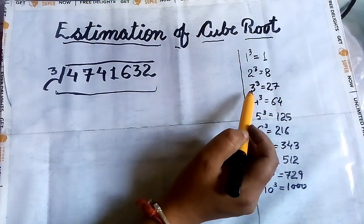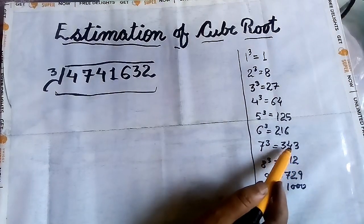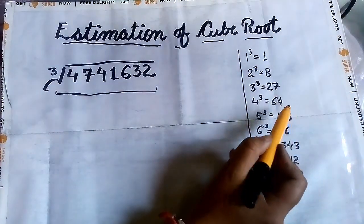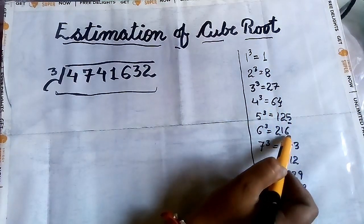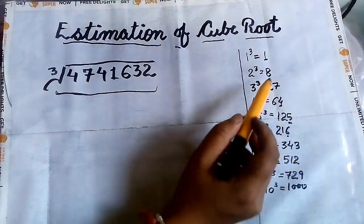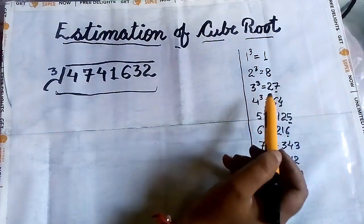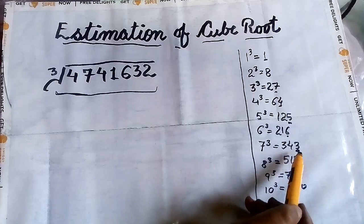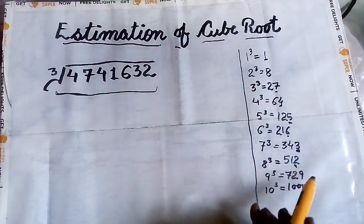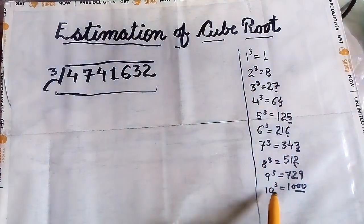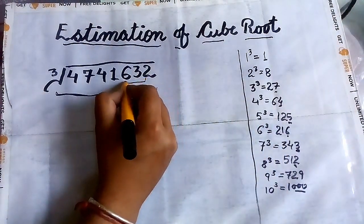Since 3³ = 27 and 7³ = 343 (ones digit 3), when a number ends with 7 its cube root ends with 3, and when a number ends with 3 its cube root ends with 7. The cube of 4 ends in 4, the cube of 5 ends in 5, the cube of 6 ends in 6. If a number ends with 0, its cube root will also end with 0.